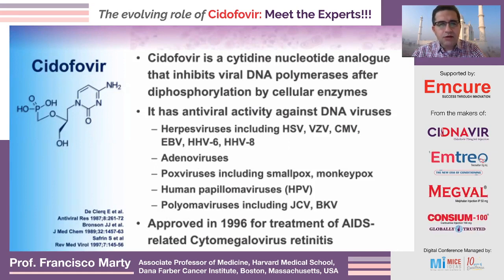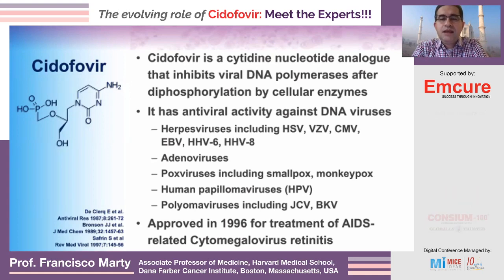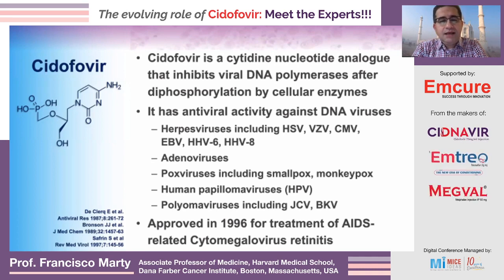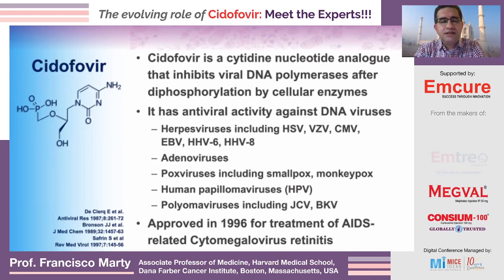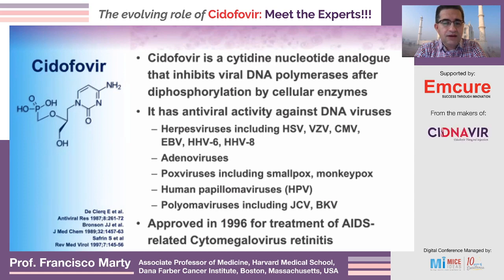Cidofovir is a nucleotide analog that inhibits the viral DNA polymerase. As opposed to ganciclovir and acyclovir, it doesn't need a viral thymidine kinase — it just uses the cellular enzyme. It has a broad spectrum of activity against DNA viruses in vitro, though that doesn't necessarily mean it's active in vivo. This includes all herpesviruses, adenoviruses, poxviruses, human papillomaviruses, and polyomaviruses.